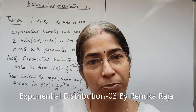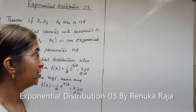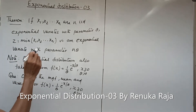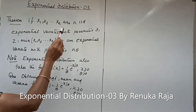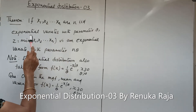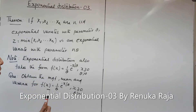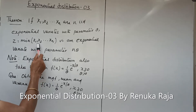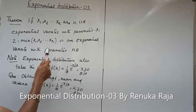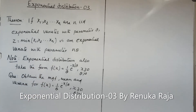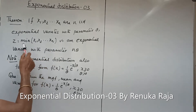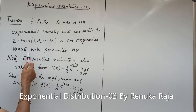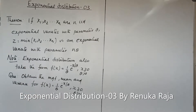Let us continue exponential distribution. We state a theorem: if x1, x2, ..., xn are n iid exponential variates with parameter theta, then z equal to minimum of x1, x2, ..., xn is an exponential variate with parameter n theta.